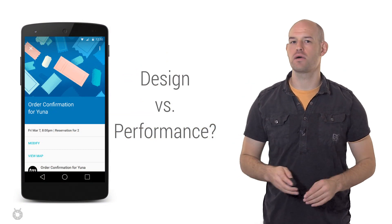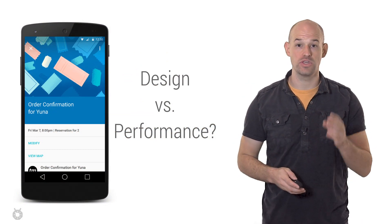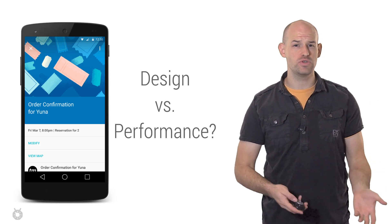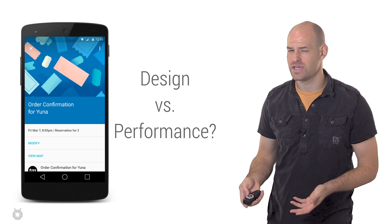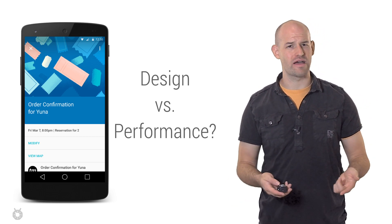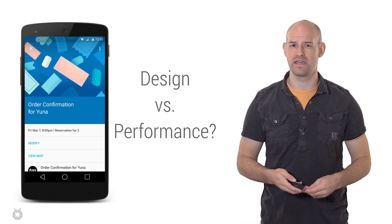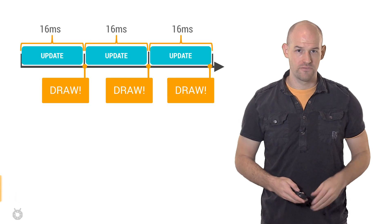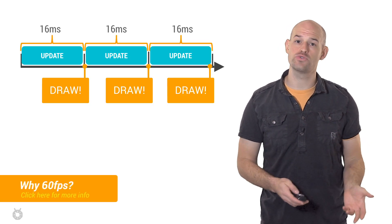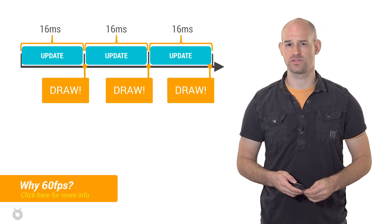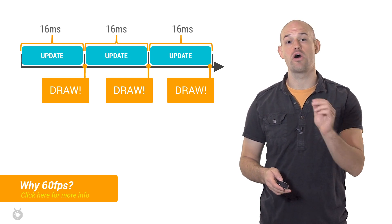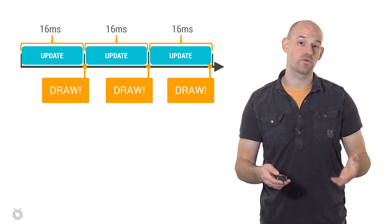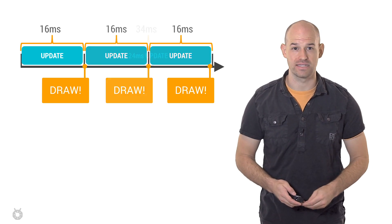Rendering performance is the most common performance issue that you run into while building an app. On the one hand, your designers want to produce the most usable, transcendent experience for your users. But on the other hand, all those fancy graphics and transitions may not work well on every device. The system will attempt to redraw your activity every 16 milliseconds or so, which means your application needs to run all the logic that updates the screen in that 16 millisecond frame in order to hit 60 frames per second.